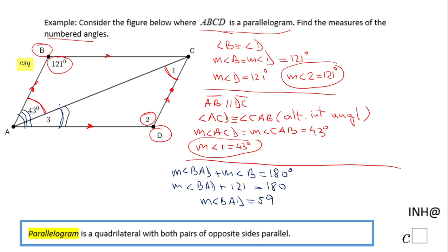We can subtract 121 from both sides and we're gonna get 59. And that is the angle BAD. But angle BAD is the sum of angle BAC, which is 43 by the way, and angle CAD, which is angle 3. This is the protractor postulate.